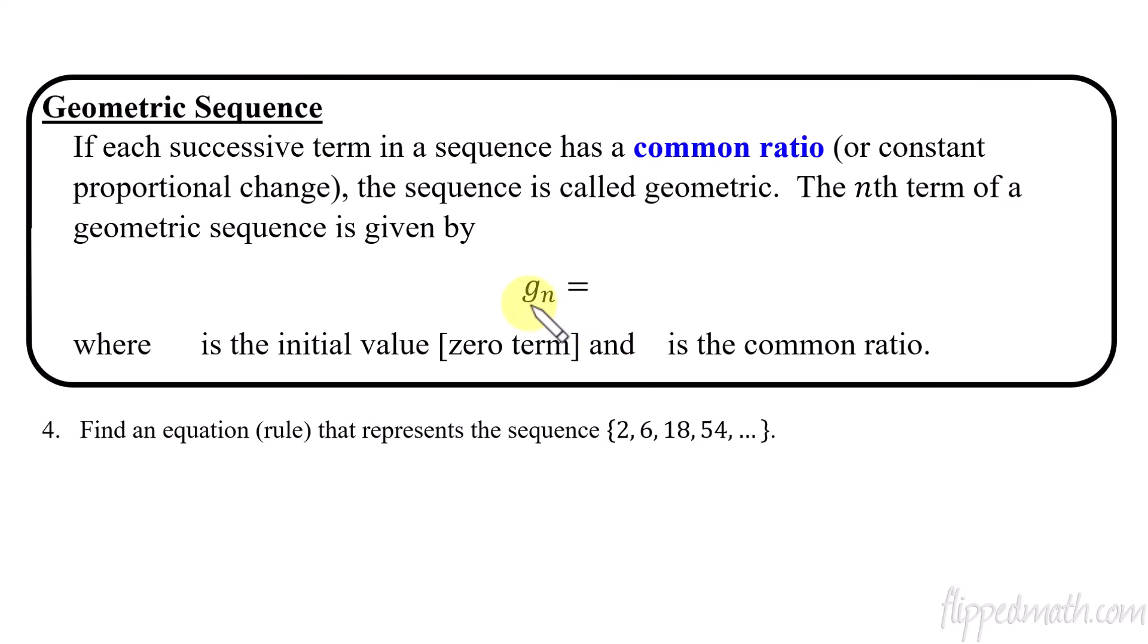So the rule of this is the following. Now notice here, I said G instead of an A. G again, doesn't matter what variable we use. We just like to use a G because it represents geometric, but it's not wrong if you don't use a G. So in this case, we're going to take the initial term, the G₀, the initial term, and we're going to multiply it by an r, a common ratio raised to the nth power. So let's find an equation or a rule that represents a sequence. So what are we multiplying by each time?